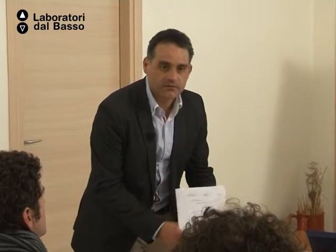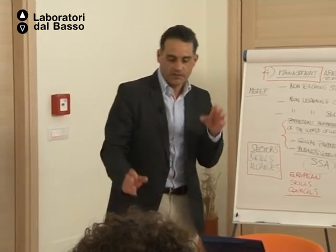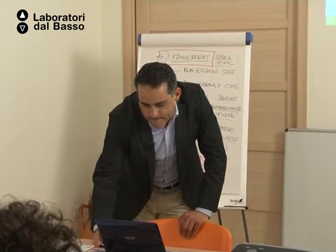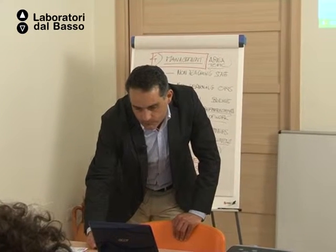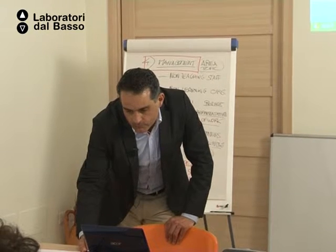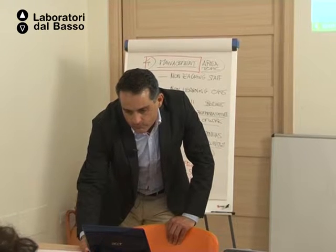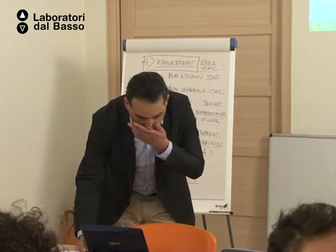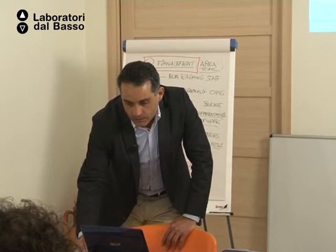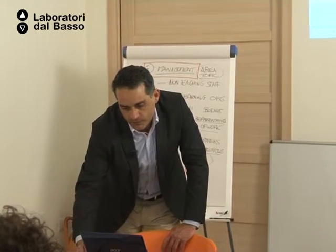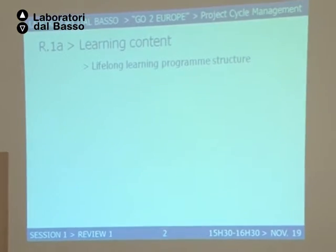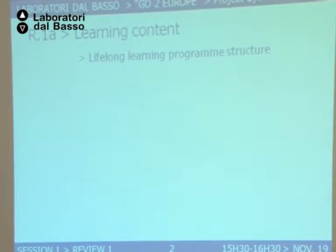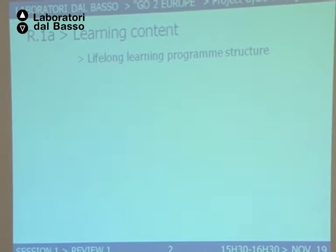What we can do now is a review of what we've been learning today — kind of like Polaroids of what happened. What did we learn today? Lifelong learning program structure — sectorial, transversal. Remember: Erasmus, Comenius, Erasmus, Leonardo, Grundvig, Key Activity 1, 2, 3, 4. Good memory. We had an idea of the standard project life cycle within the European agency.